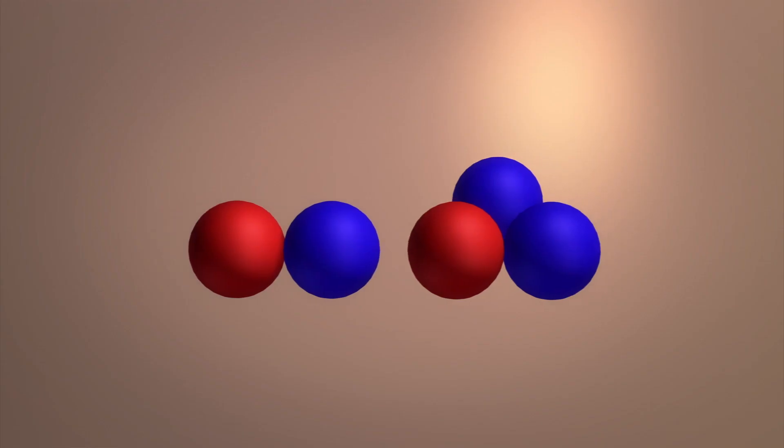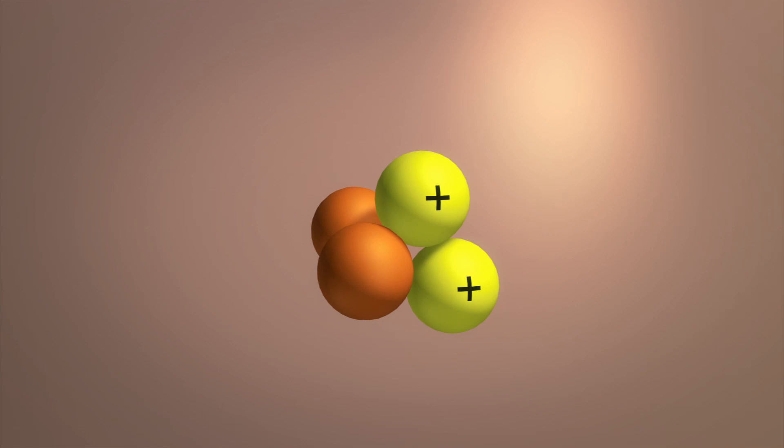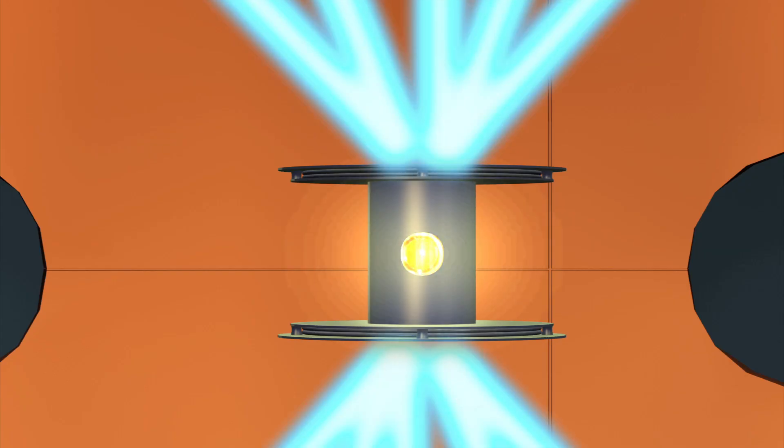At high temperatures, the nuclei of the deuterium and tritium are fused together and alpha particles are produced, generating energy.